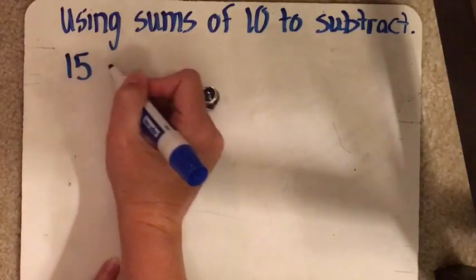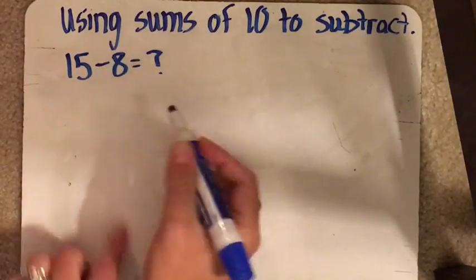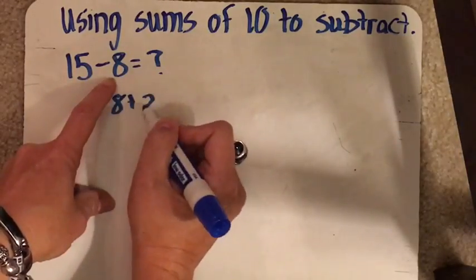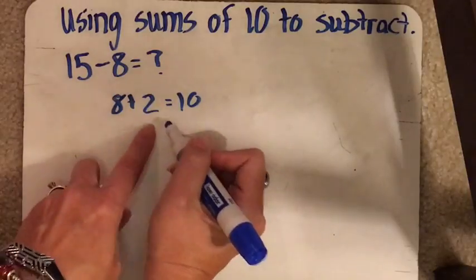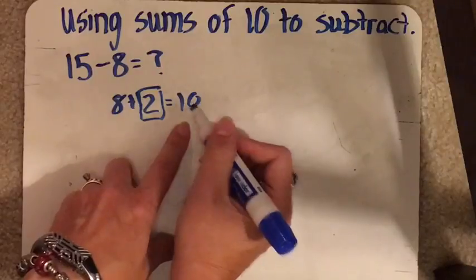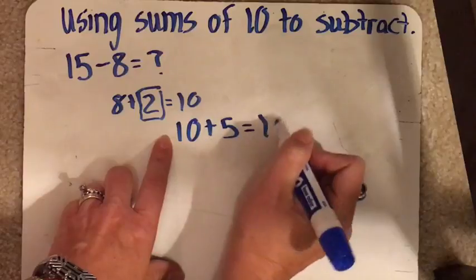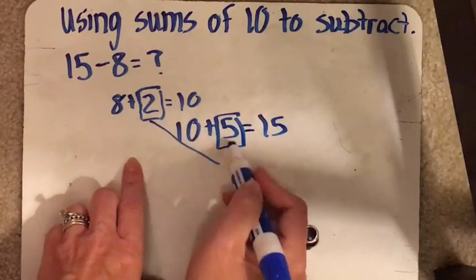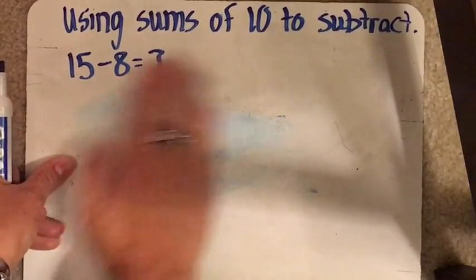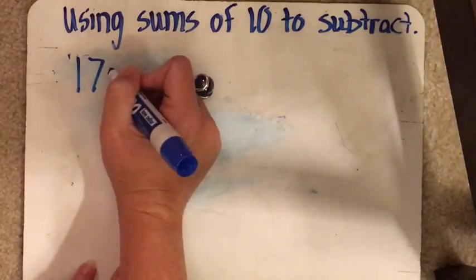So we're going to use a problem like 15 minus 8. And what you're going to ask yourself is, what do I need to add to 8 to get to 10? So 8 plus 2 equals 10. And most of us know our 10 sums pretty quickly. So we're going to take that 2 and then we have to ask ourselves from 10 to get to 15, what do we have to add? So 10 plus 5 equals 15. Again, those are easy sums that we can do in our head. And then we just add those two numbers together. So 5 plus 2, the answer would be 7. So that's one way to do it, and I kind of wrote it out there. But eventually, like I said, you'll be doing this mental math.